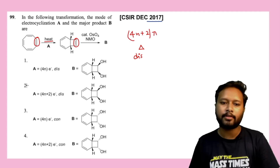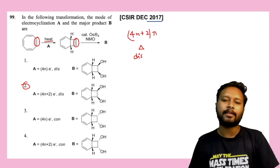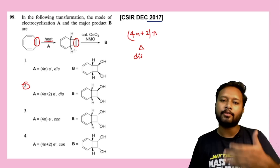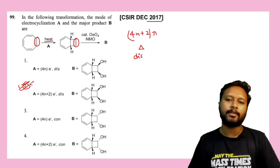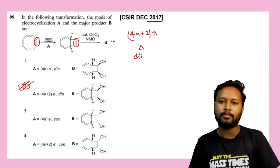So you get disrotation — that's your first answer. Then if you react with osmium tetraoxide (OsO₄), you know it does cis addition of OH groups. The OH groups are going to add to the isolated alkene, not the conjugated alkene. The isolated alkene undergoes cis addition of OH and that gives the final product. Option number 2 is the correct option.